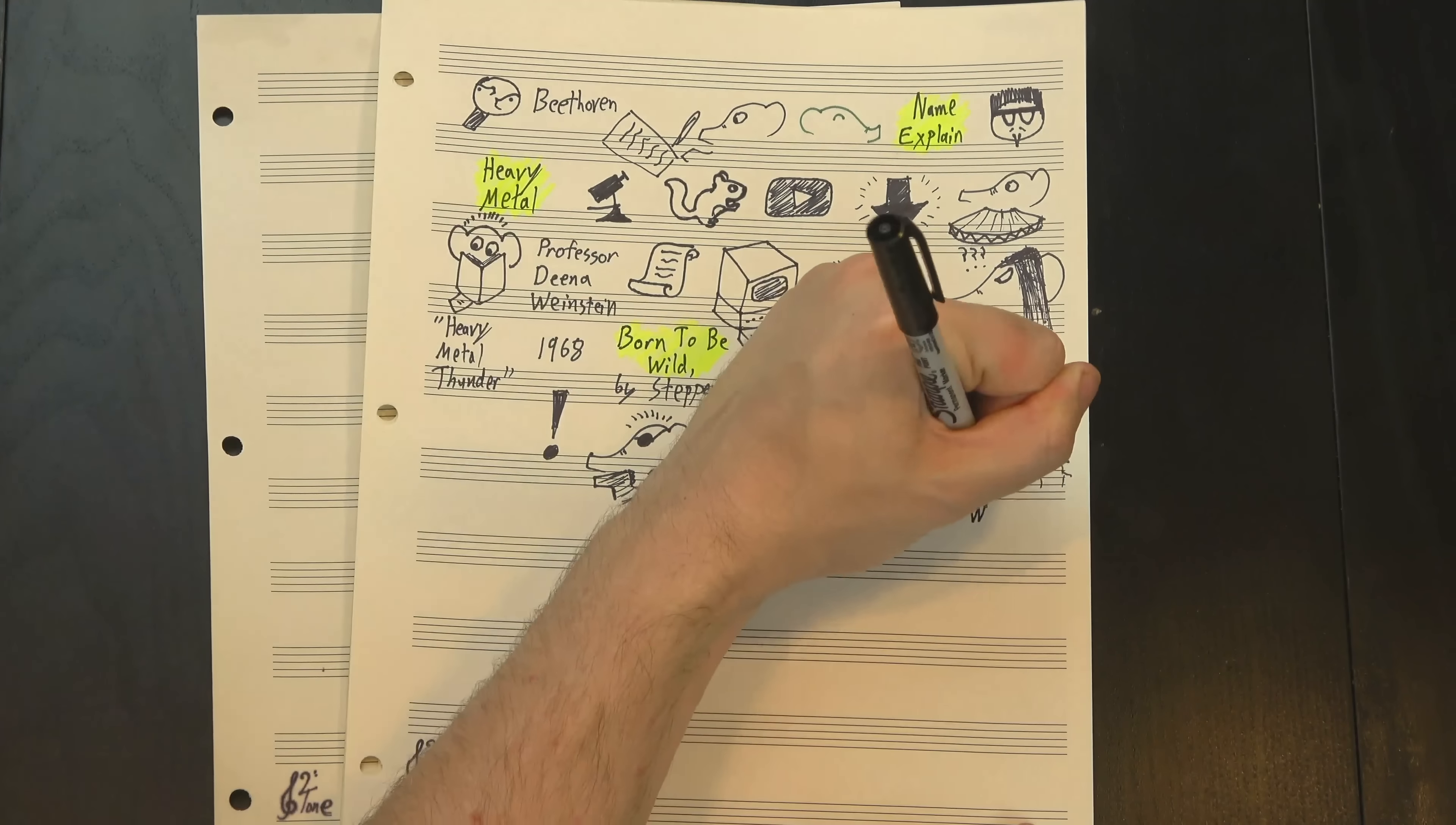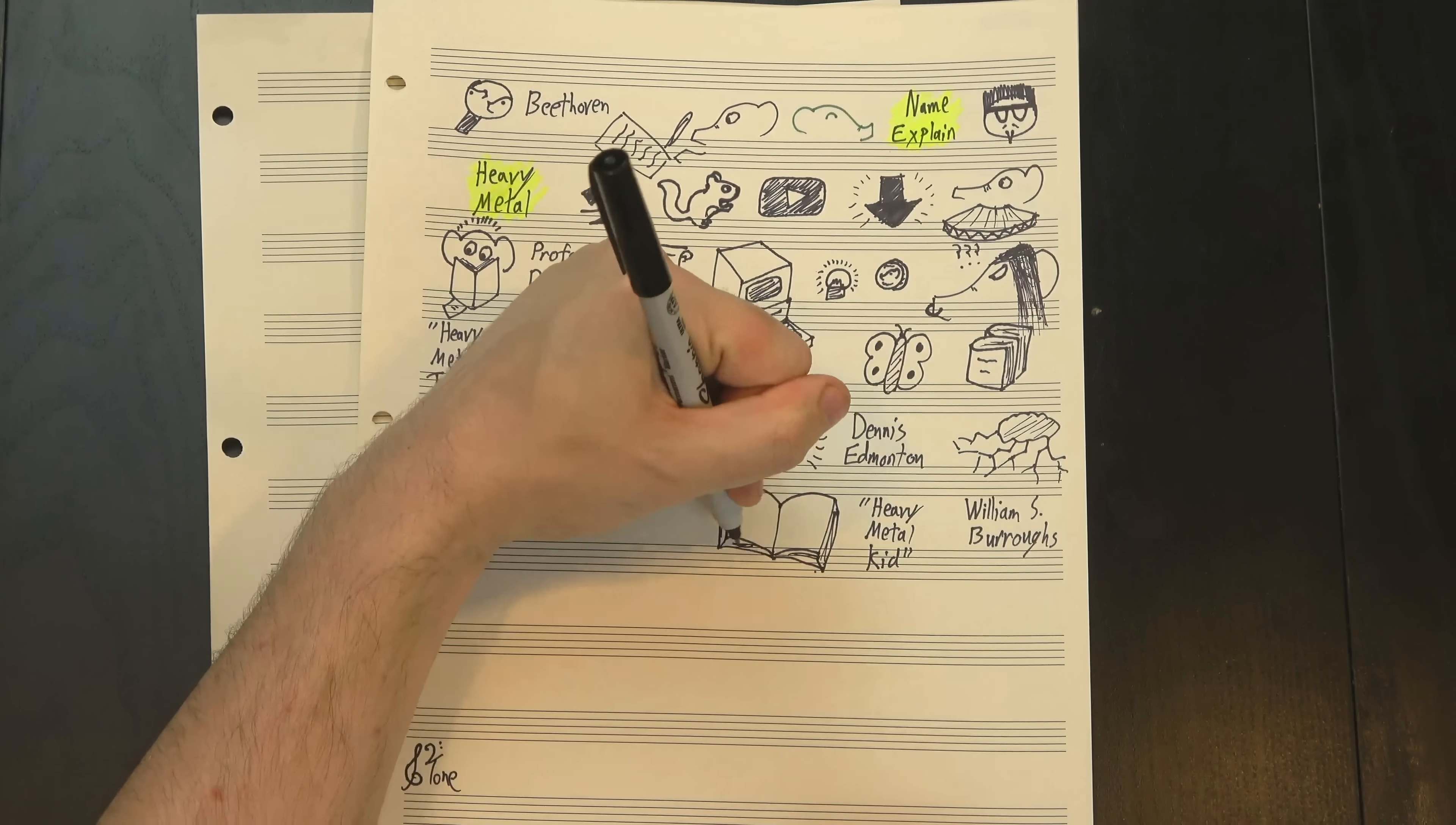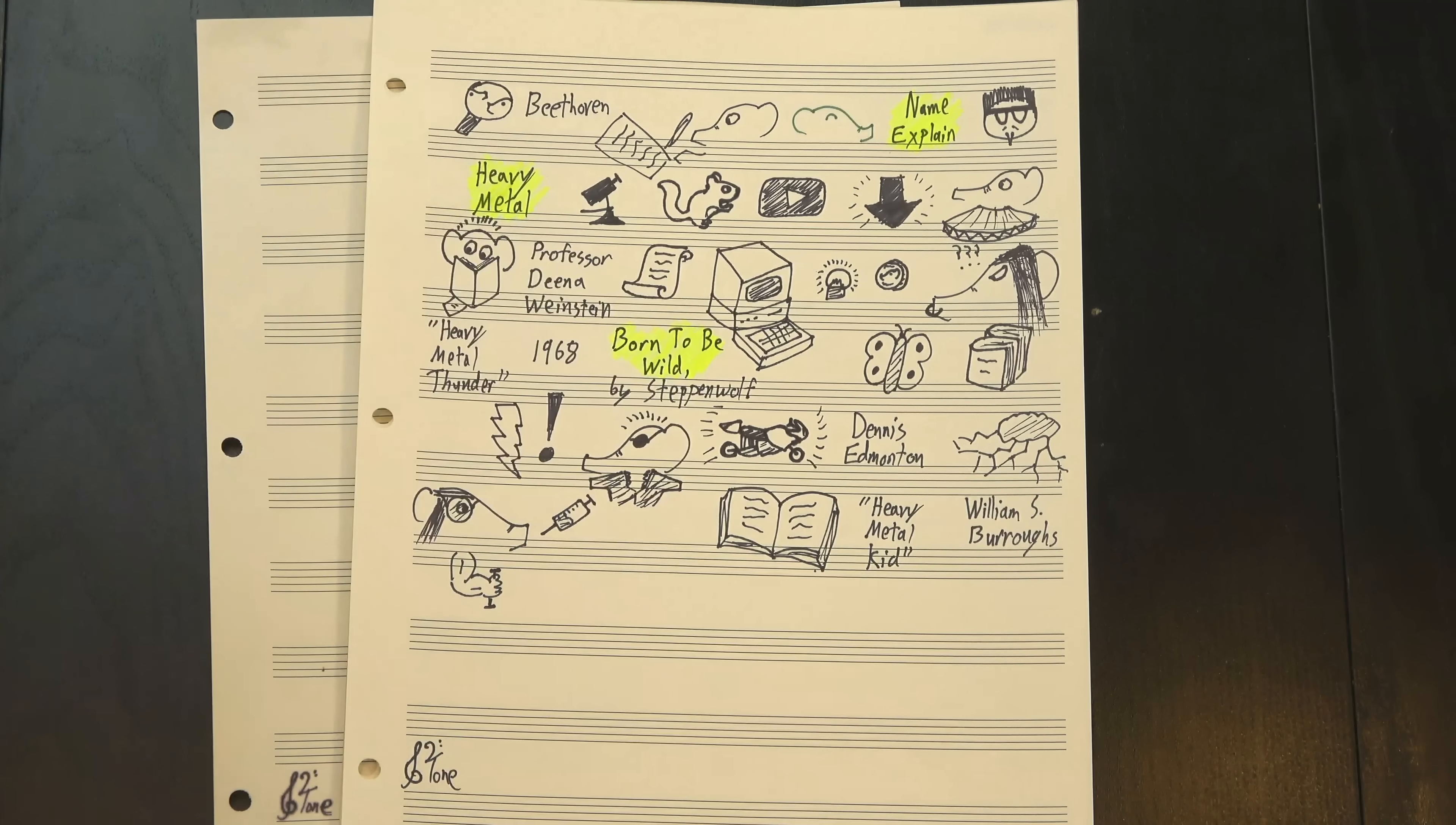Another possible source, though, is the work of beatnik author William S. Burroughs, whose Nova trilogy features an android character named Uranian Willie the Heavy Metal Kid. In fact, the term heavy metal appears frequently in Burroughs' work, often used as a metaphorical stand-in for heroin. The word heavy was also just a part of beatnik and hippie vocabularies, meaning profound or powerful, two words that could certainly describe early metal music.